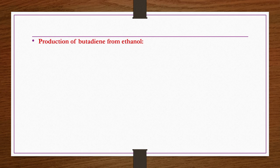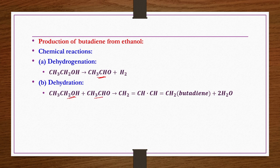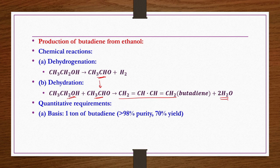The third process is production of butadiene from ethanol, primarily used in India due to lack of butane resources but abundance of natural ethanol from fermentation. There are two steps: first, dehydrogenation of ethanol to produce acetaldehyde; then, the acetaldehyde reacts with excess ethanol in a dehydration step to produce butadiene. Reaction 1 is the dehydrogenation of ethanol to produce acetaldehyde; reaction 2 is the dehydration where excess ethanol reacts with acetaldehyde to produce butadiene and water.